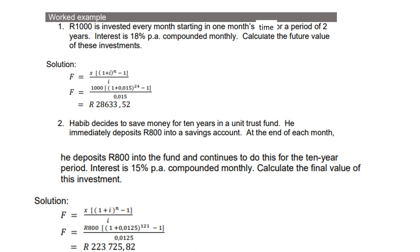Habib decides to save money for 10 years in a unit trust fund. He immediately deposits R800 into the savings account. At the end of each month, he deposits R800 into the fund and continues to do this for the ten-year period. Interest is 15% per annum compounded monthly. Calculate the final value of this investment. Again, i is 15 divided by 100, and then divide by 12, which gives 0.0125. Then n, although it's 10 years, you must remember it is n + 1. So therefore, it's 10 times 12 plus 1, which is 121. Because remember, he did the deposit immediately. The answer is then R223,725.82.